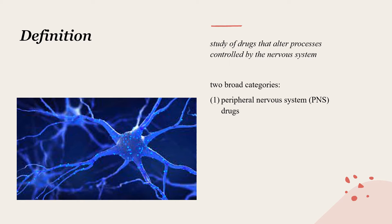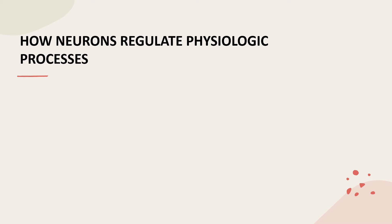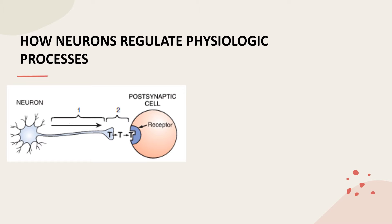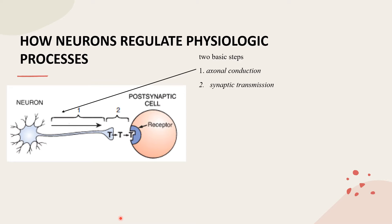How do neurons regulate physiologic processes? The figure depicts two cells: the neuron and the postsynaptic cell. The postsynaptic cell might be another neuron, a muscle, or a cell within a secretory gland. There are two major basic steps: axonal conduction and synaptic transmission, the process by which the neuron influences the behavior of the postsynaptic cell.